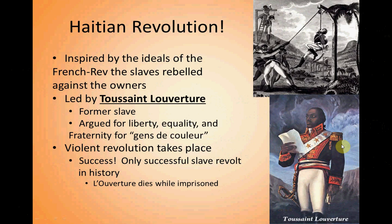A very violent revolution took place. This is probably one of the most famous images you might see on AP exams — people being lynched. Lynching is where a rope is put around someone's neck and they are pulled up and strangled, a particularly cruel way to kill someone. The white owners of Haiti had been so horrendous that when their time came and the revolution finally arrived, there were terrible abuses back against them. It was a successful revolution — the Haitian Revolution succeeded.